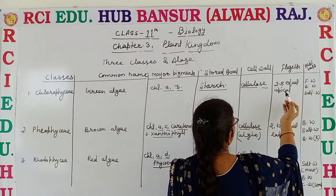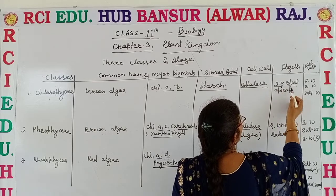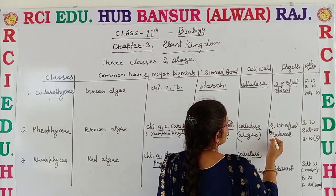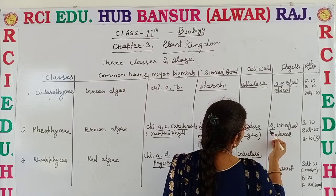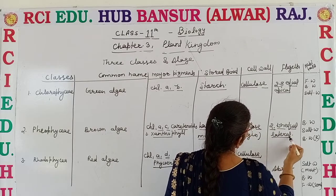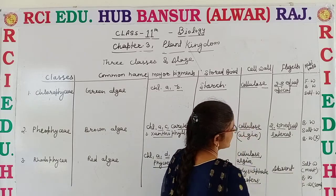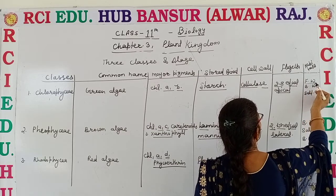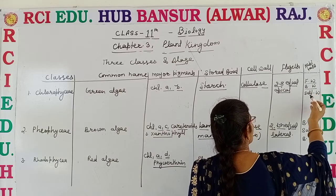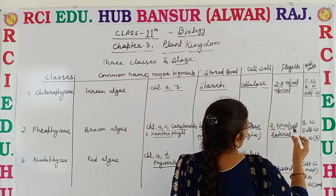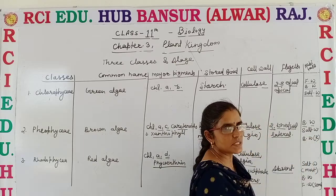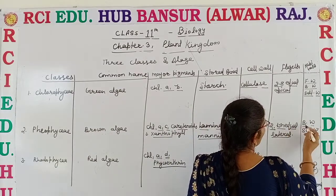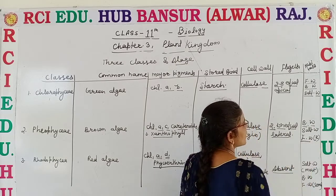Regarding flagella: Chlorophyceae has 2 equal and apical flagella which are terminally grown. Phaeophyceae has 2 flagella — biflagellate — but both flagella are unequal and lateral in position. In red algae, flagella are absent. For habitat: Chlorophyceae lives mostly in fresh water, brackish water where fresh and salty water mix, as well as in salty water. Phaeophyceae or brown algae is mainly present in brackish water and salty water, and is found rarely in fresh water.